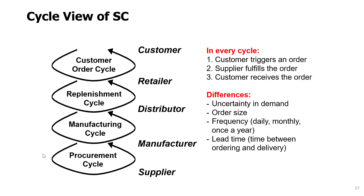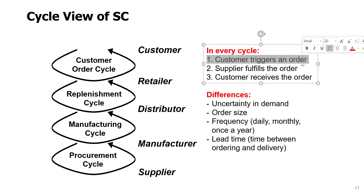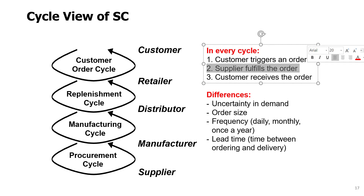Cycle view and push-pull view of supply chains. When we look at the supply chain in detail, we can recognize that there are a number of cycles that connect different companies in the supply chain. In every cycle, a customer triggers an order, then the supplier fulfills the order, and then the customer receives the order.